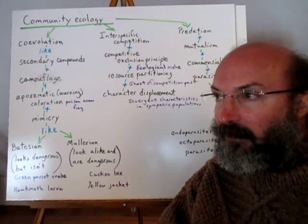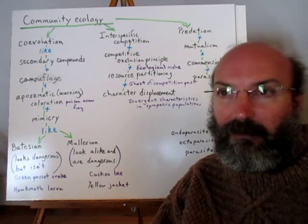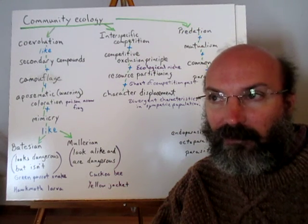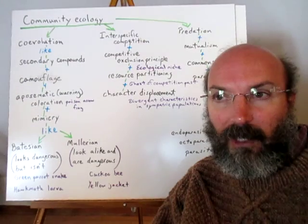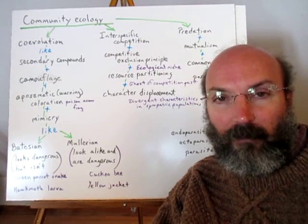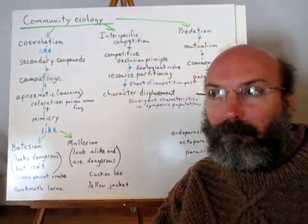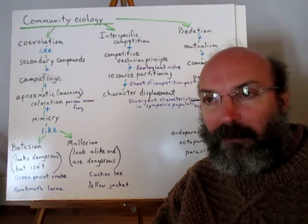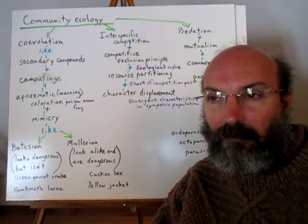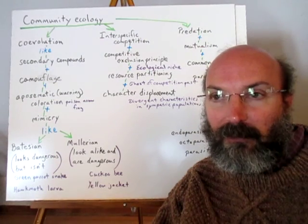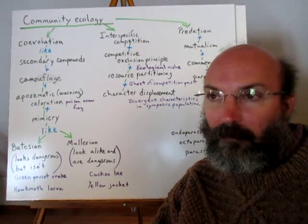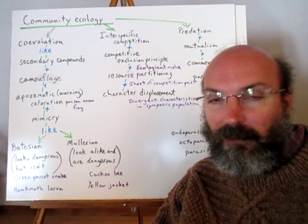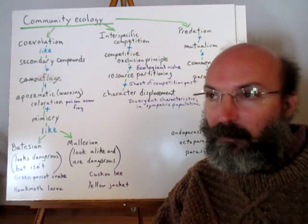The idea of niche can be looked at in a couple of ways. A theoretical niche is what an organism could potentially occupy in the environment if there were no competition. The realized niche, or fundamental niche, is what the organism actually does occupy — the amount of the environment it can take advantage of because competition is present. Classic studies on barnacles and paramecia have demonstrated that this principle actually plays out in nature.